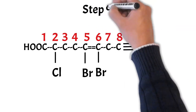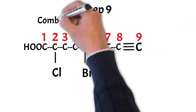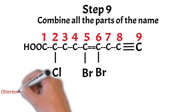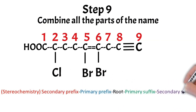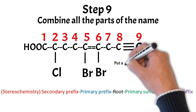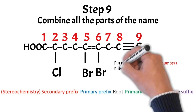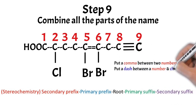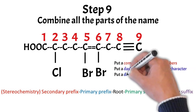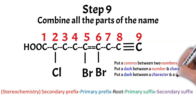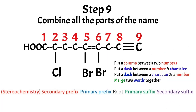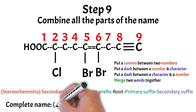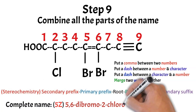Step number 9: combine all the parts of the name. Don't forget to put a comma between two numbers. Always put a dash between a number and a character. Put a dash between a character and a number. And merge two words together. Now let's combine all the parts of the name of this compound — our name will look like this.